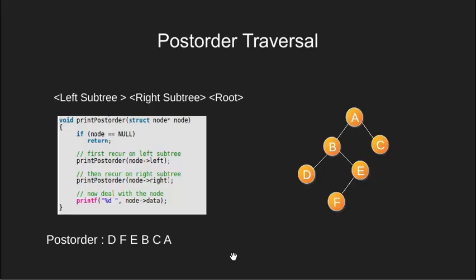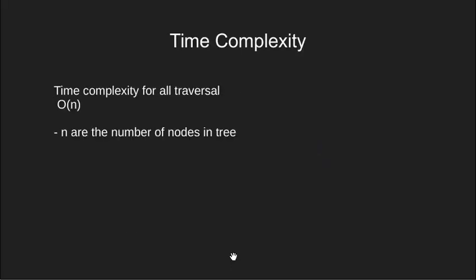Now we look at the complexity of the algorithm. All the algorithms finish in linear time, so the time complexity will be O(n), where n is the number of nodes in our tree. With this we come to the end of this tutorial. If you have any doubts or suggestions please leave them in the comment box below. Thanks for watching.